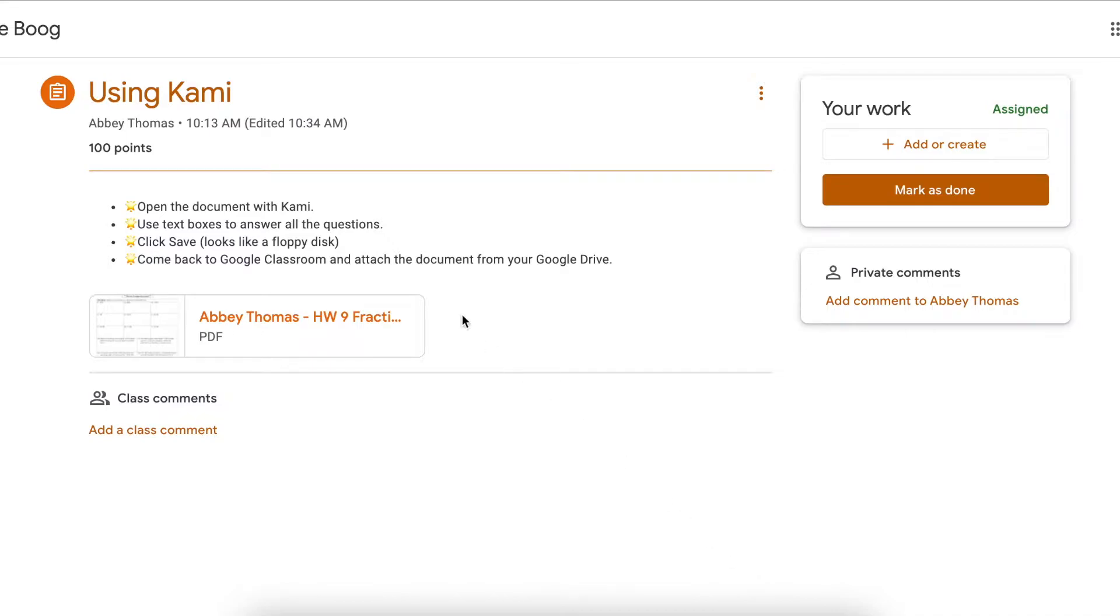This assignment says open the document with Kami, use text boxes to answer all the questions, click Save, it looks like a floppy disk, come back to Google Classroom and attach the document from your Google Drive.